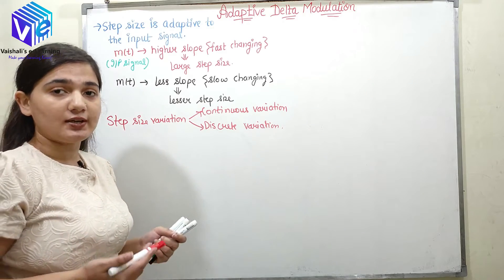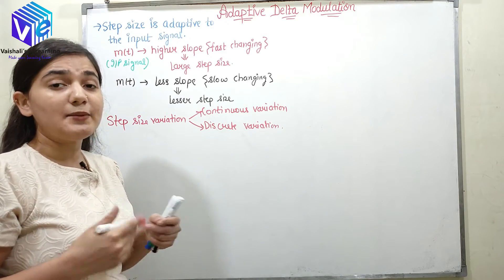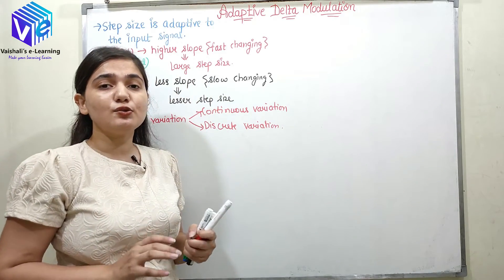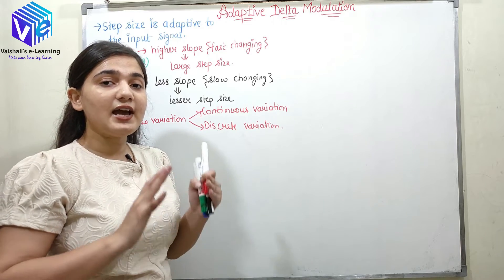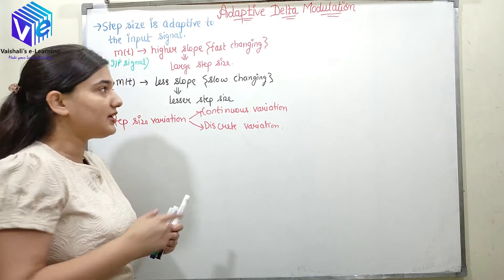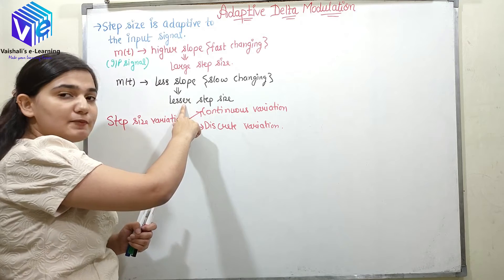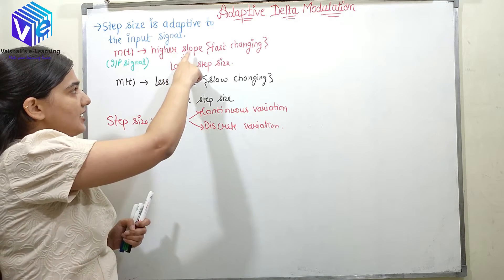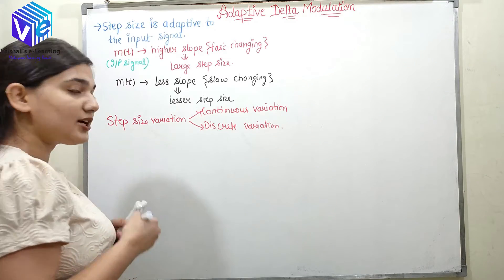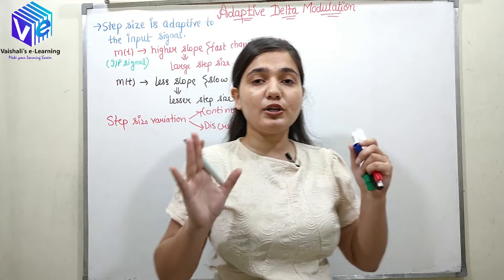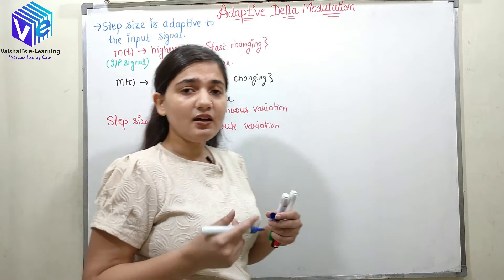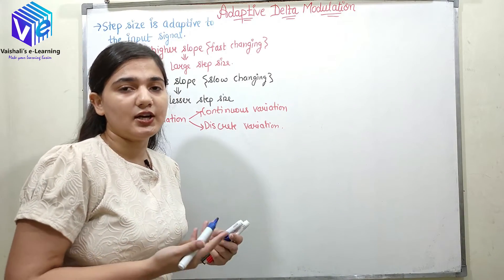Here we have a logic which will control the step size. You should understand that I have a logic which is controlling the step size according to the message signal. Whenever we have less slope, the step size would be lesser, and whenever we have higher slope, the step size would be more. Now, the delta modulation and the adaptive delta modulation are both the same — the only difference is in the step size controller or the logic controller.